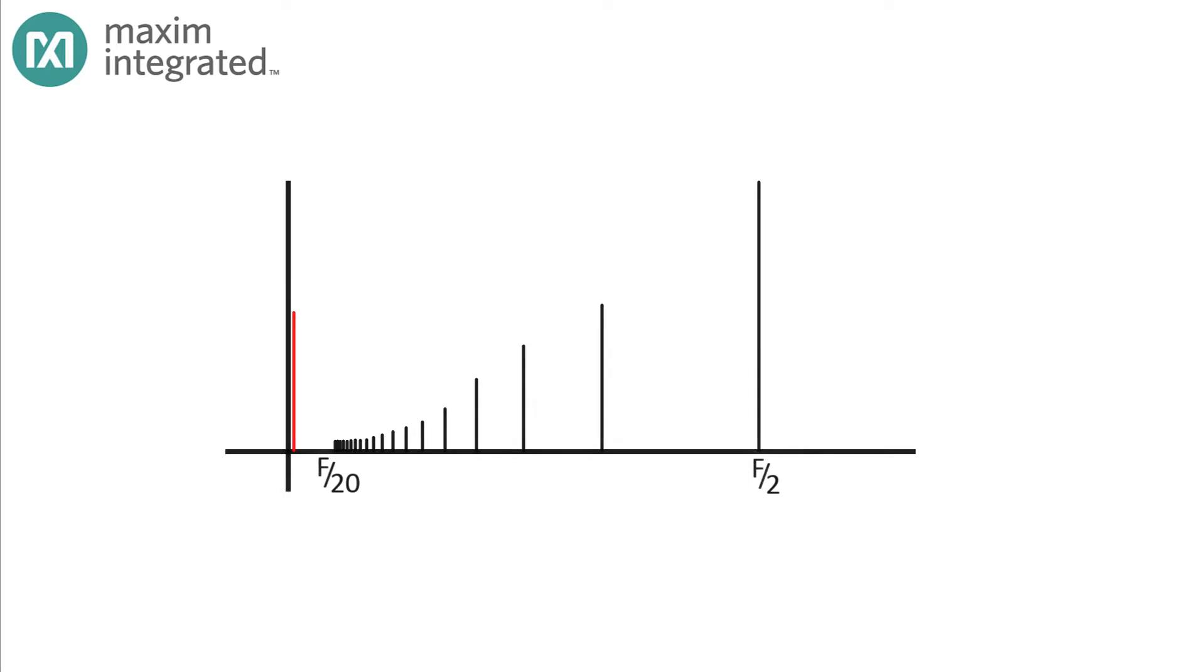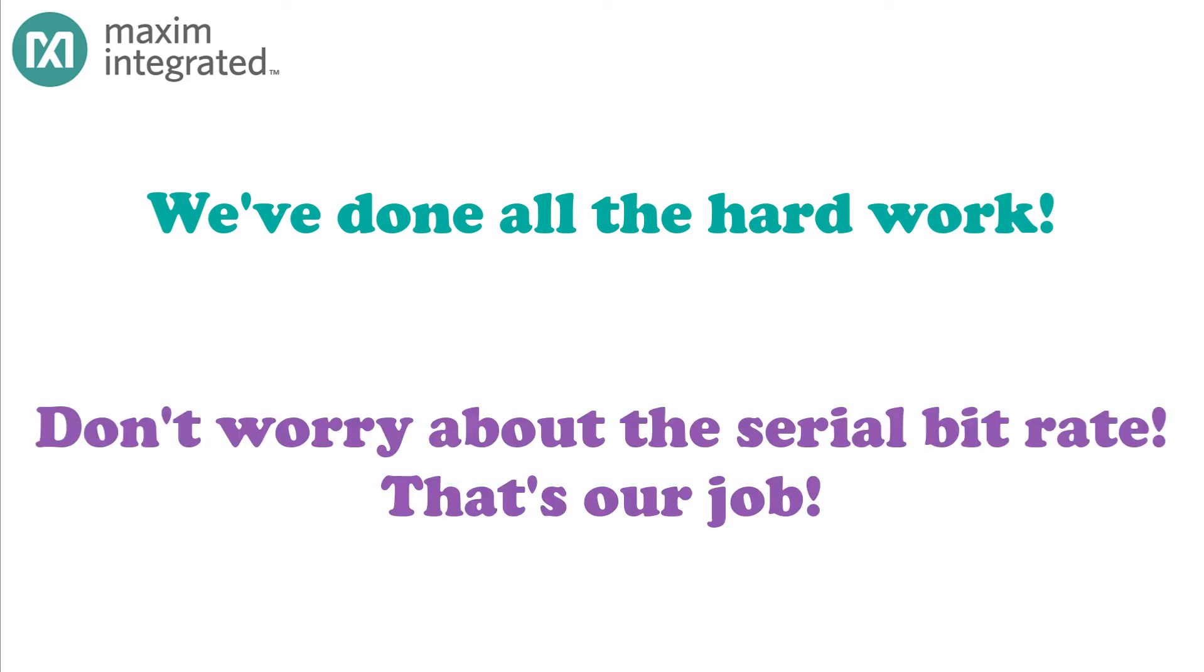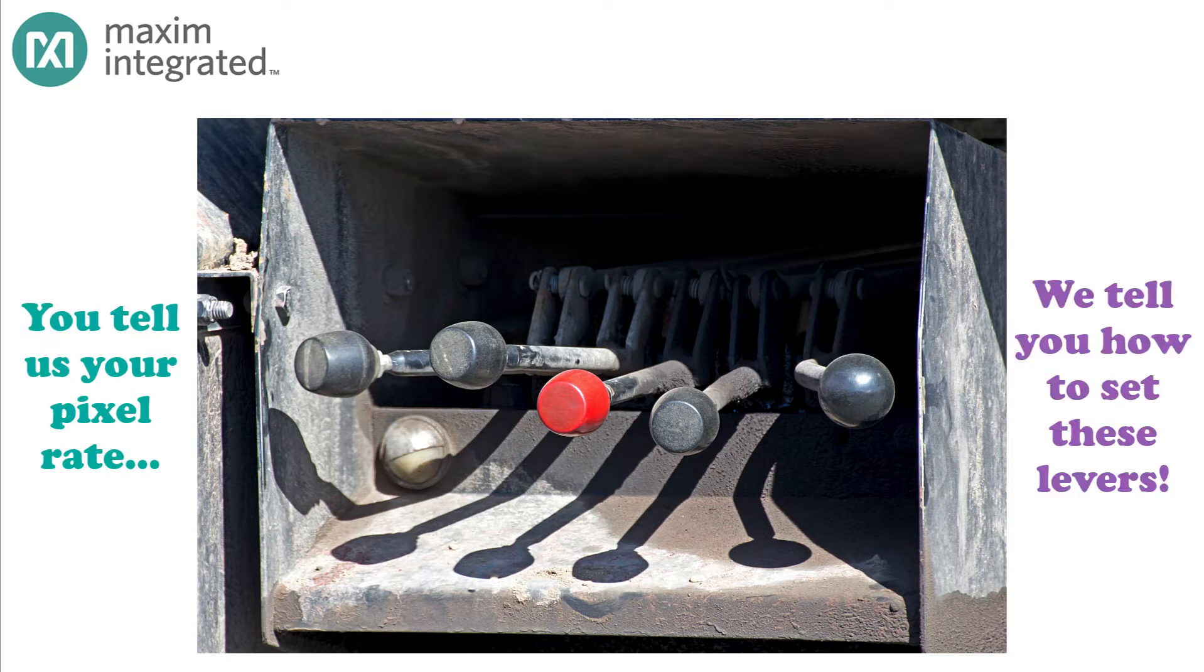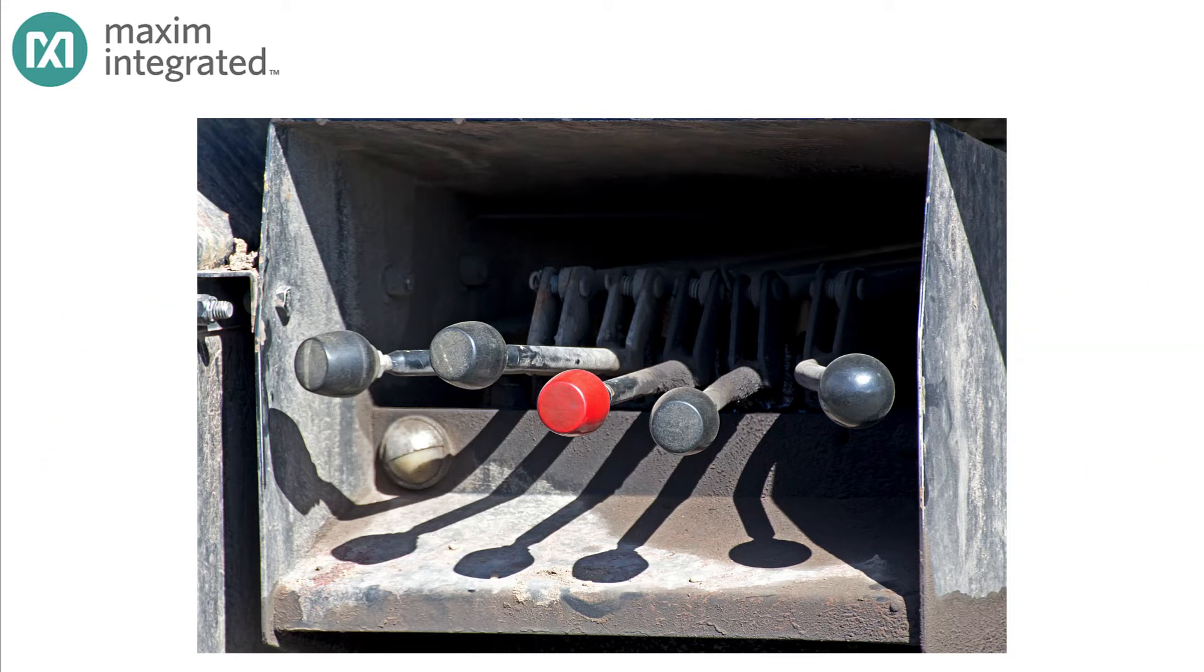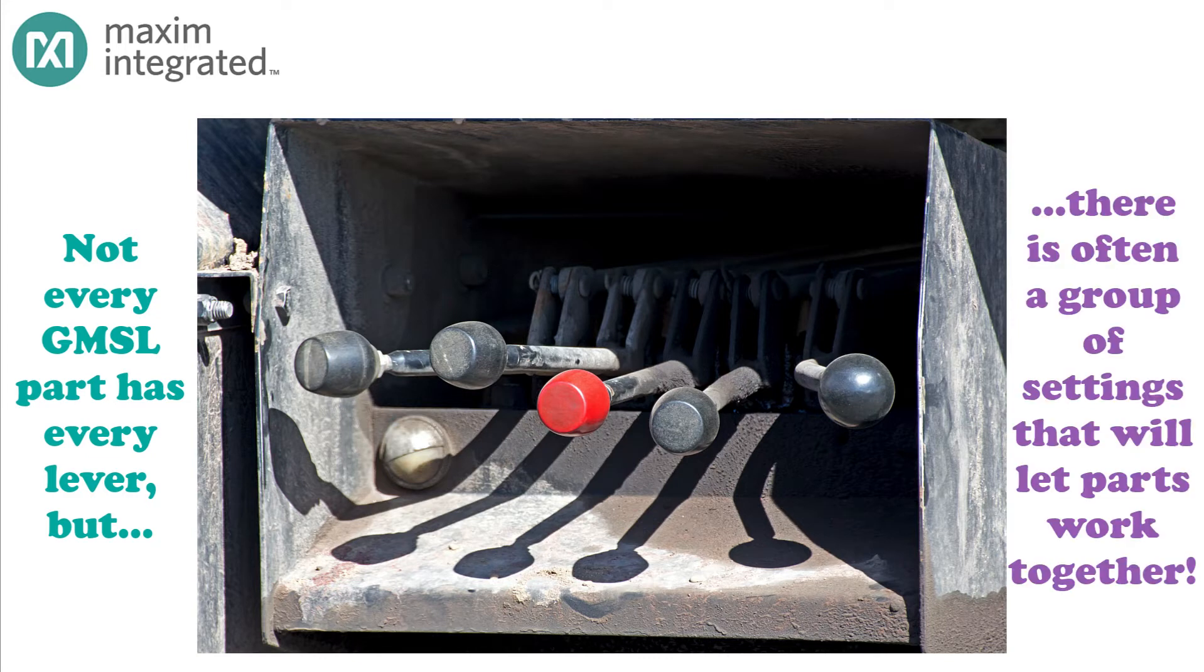Sound complex? Well, it is. But the good news is that Maxim has done all the hard work for you, and in fact, Maxim doesn't even specify the range of serial bit clocks. Instead, what we do is we give you a whole set of levers and tell you the pixel frame size and the acceptable range of pixel clock frequencies for each setting. Follow the guidelines, and you can be certain that the resulting pixel clock will be right for your application. Let's explore some of those levers. Now, keep in mind, not all of these levers are available in any particular GMSL part. But the idea of GMSL is that for any serializer and deserializer, there will generally be a group of settings that they have in common, so that they'll play together. Alright, with that said, let's get started.